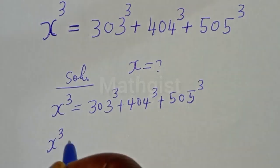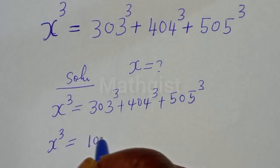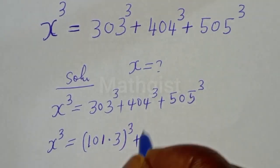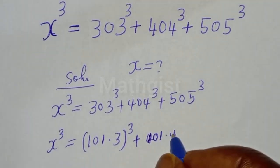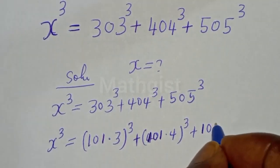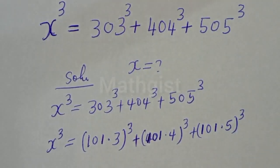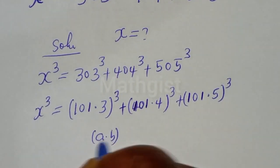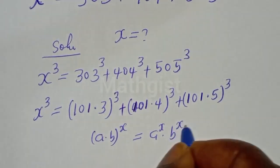S raised to power 3 is equal to 303 to the power of 3, which can be written as 101 multiplied by 3, to the power of 3, plus 101 multiplied by 4 to the power of 3, plus 101 multiplied by 5 to the power of 3. Note that if you have A multiplied by B to the power of X, this is equal to A raised to power X multiplied by B raised to power X.